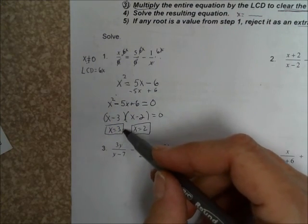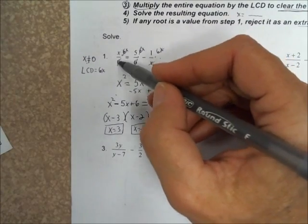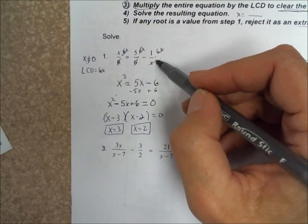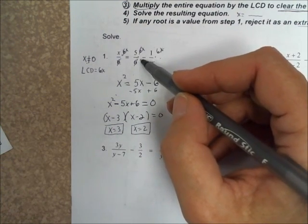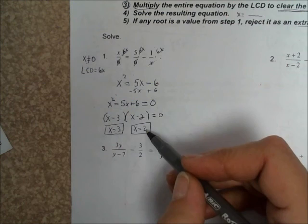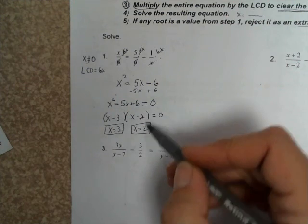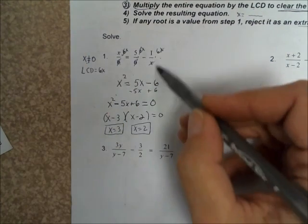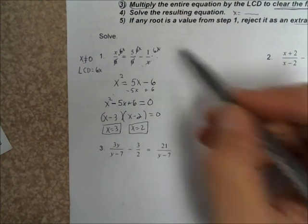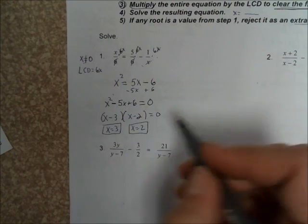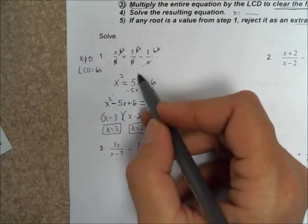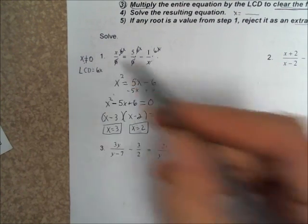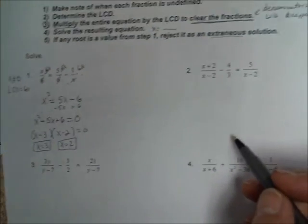If we wanted to go back and check them, we can say: does 3 over 6 equal 5 over 6 minus 1 over 3? If you put that in your calculator, you'll see that it does check. And to check for x equals 2, does 2 over 6 equal 5 over 6 minus 1 over 2? Substitute a 2 in for those x's and that will check also. As long as the answers don't match what we got in step 1, they shouldn't be extraneous.